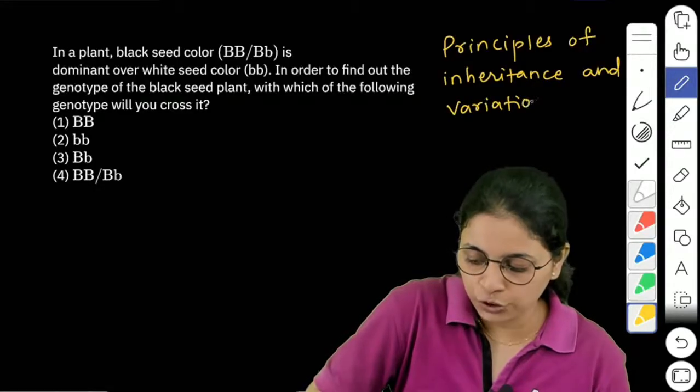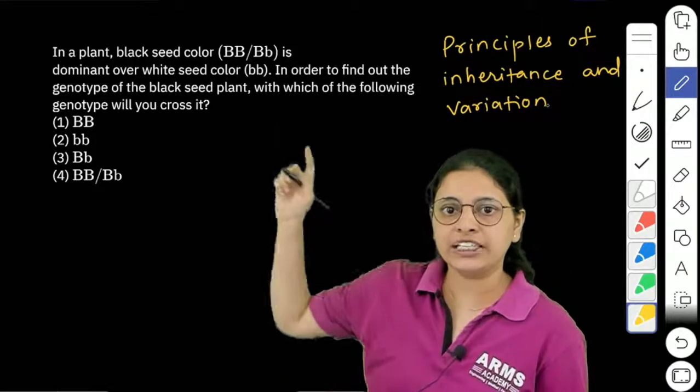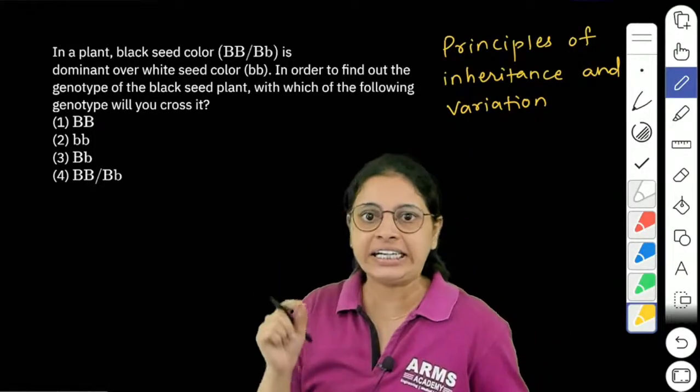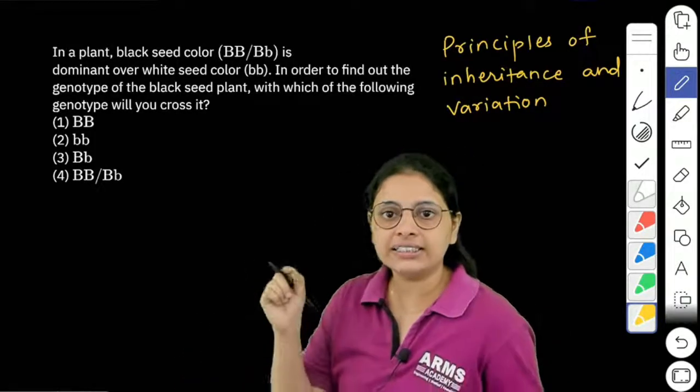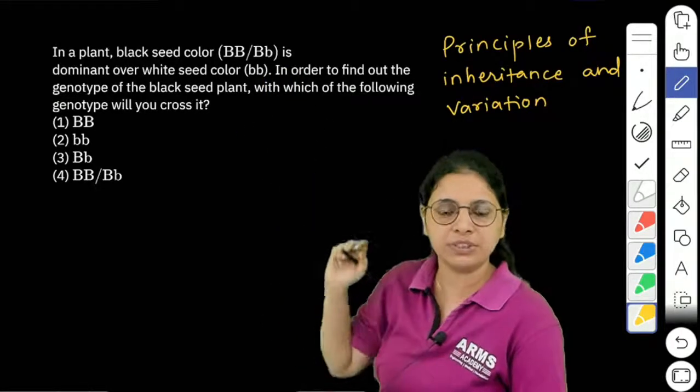You can solve this question easily if you know what a test cross is. Here, black seed color is dominant and is expressed when the genotype is either BB or Bb.